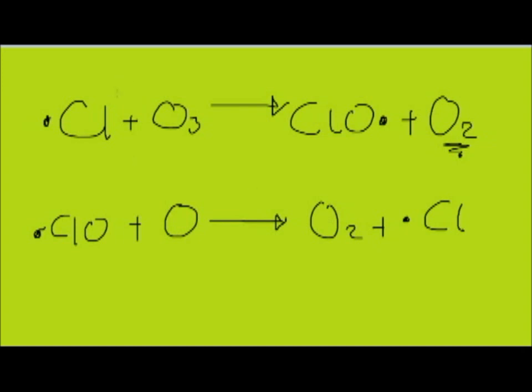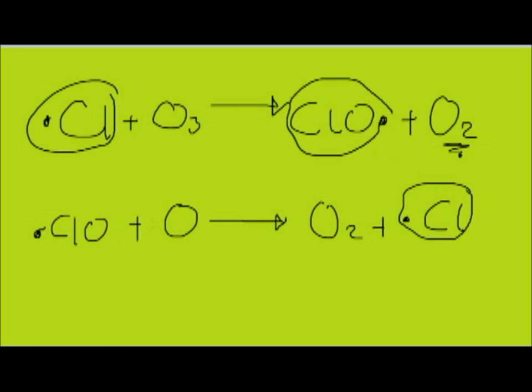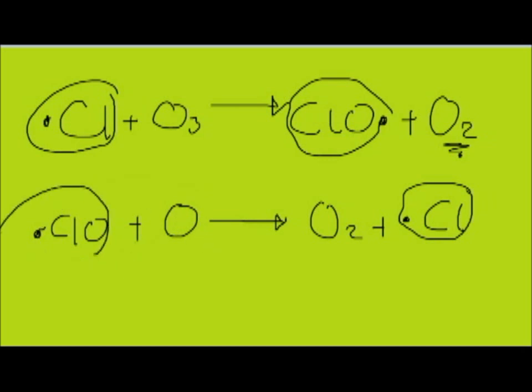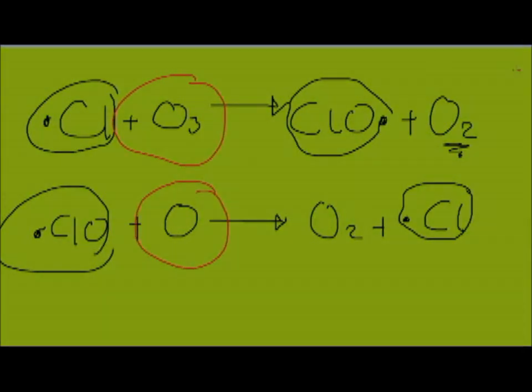We can see that in both of these equations, the chlorine radical starts in the first equation and is reproduced at the end of the second equation. This means we can cancel it out, along with the intermediate species, giving us the overall formula: O3 plus O forms 2O2. The fact that chlorine radicals are reproduced means that one radical can go on to destroy many thousands of molecules of ozone, which is why it's so dangerous.